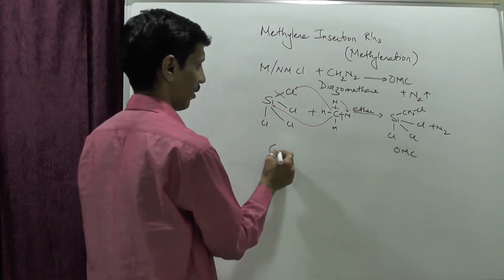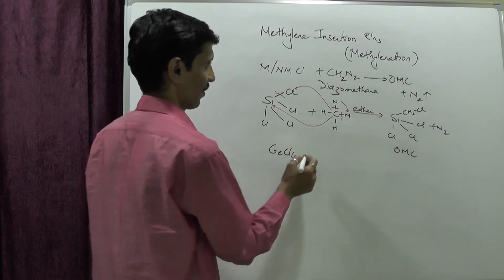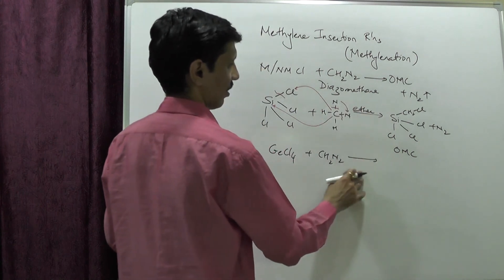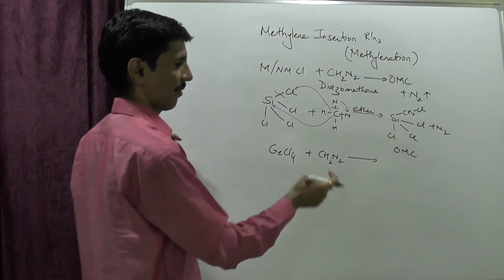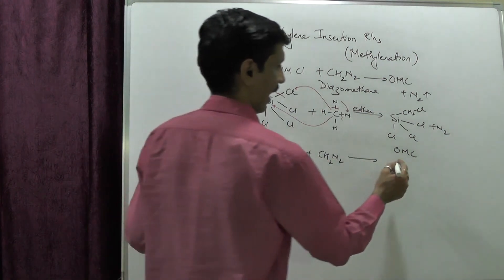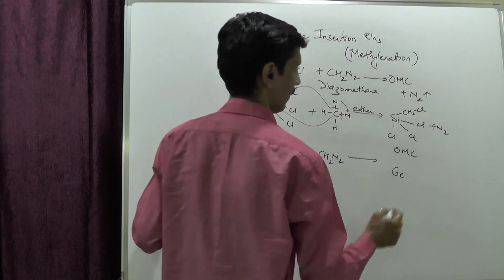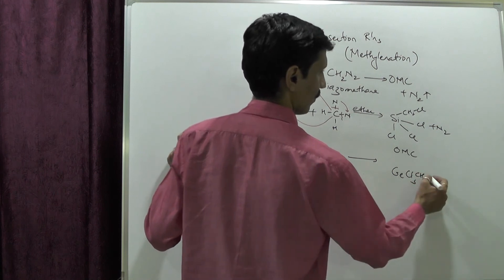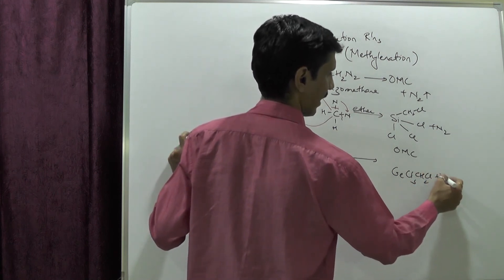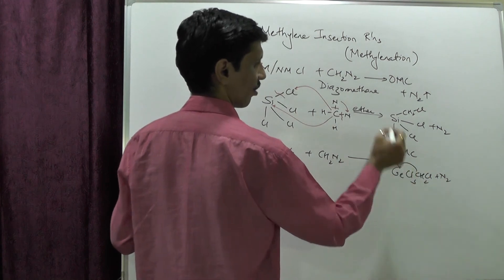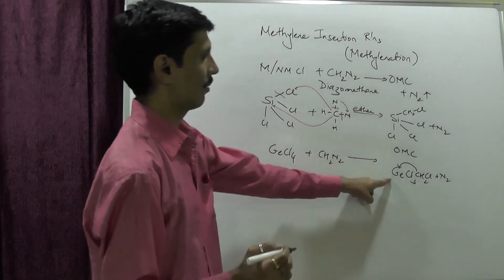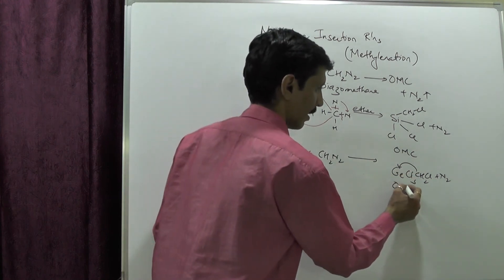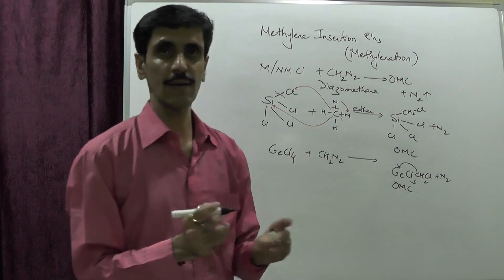Similarly, GeCl4 plus CH2N2 in the presence of ether, using copper as a catalyst, gives GeCl3CH2Cl plus N2. This CH2 is bonded to germanium, and since germanium's electronegativity is less than that of carbon, this product is considered an organometallic compound.